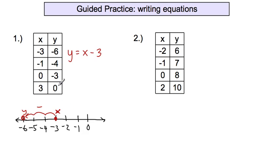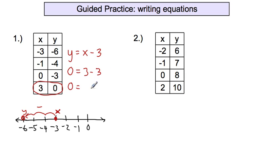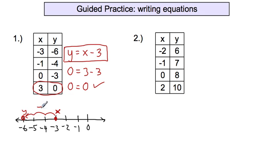That's our equation — we can figure it out from the number line, and then we have to confirm it with one of the other pairs of data. Let's pick one that's pretty easy. I'm going to substitute the values of x and y into this equation, and I should get it to balance out nicely. The y is now 0, and the x is 3, so: 0 equals 3 minus 3 equals 0. If you get the same numbers on both sides, you have checked it, and that's the equation. This checks out on a number of levels — use the number line first to figure out which way did you move, and it will tell you what your equation should look like.